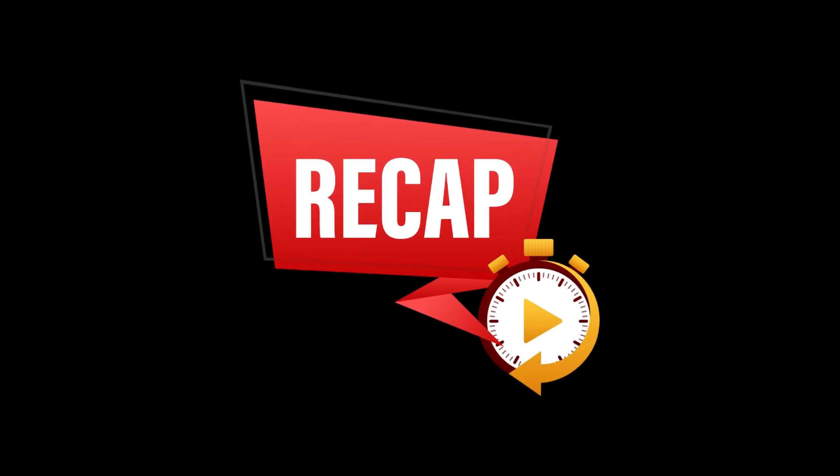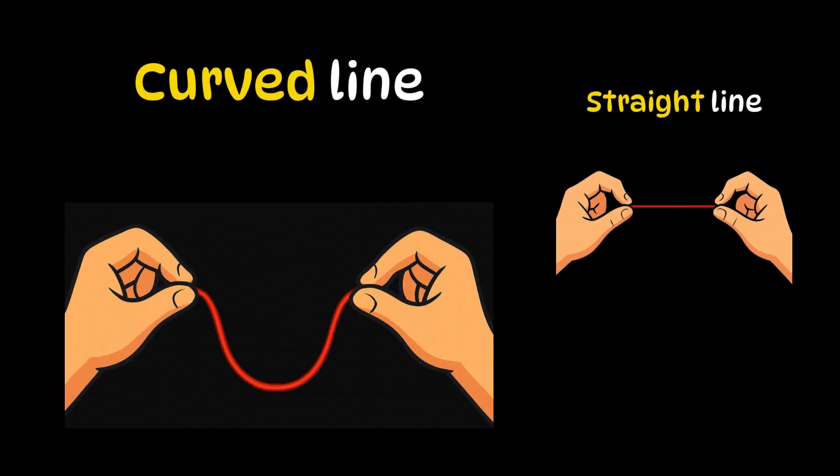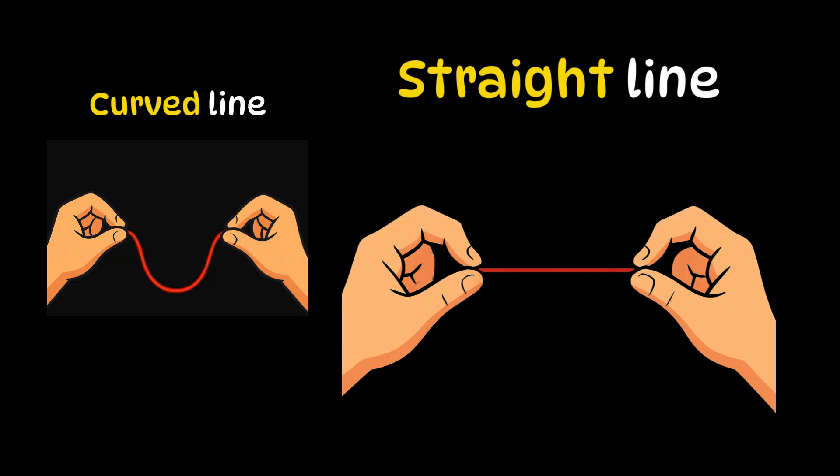Let's do a quick recap. We learned about curved lines and straight lines. Curved lines are the lines that bend. And straight lines are the lines that go in one direction without bending.